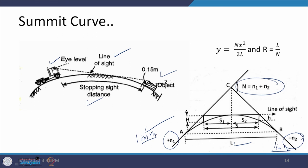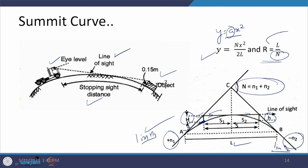For a vehicle with a line of sight at 1.2 meters from the pavement and an object on the other side, we calculate the required values. For the parabolic type, the formula y = Ax² is used. Resolving the geometry, the factor A comes out as N/(2L), so y = Nx²/(2L), and the radius of the curve becomes L/N. Once the length L is calculated, the radius is also determined.